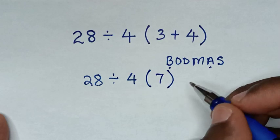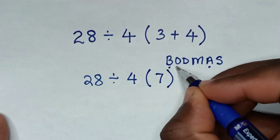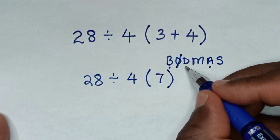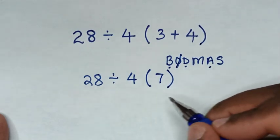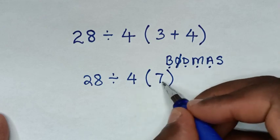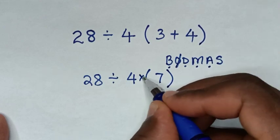Then in the next step we don't have orders or exponents. Then division, we have this division and multiplication, we have this multiplication between 4 and 7 in here we have multiplication sign.